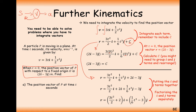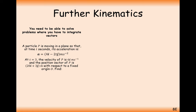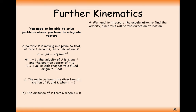The important takeaway is that c is a vector as well. Moving on to another question: acceleration is 4i minus 2tj. The second paragraph gives information needed to find c. We also need to find the angle between the direction of motion of P and the i vector when t equals 2. The direction of motion is the velocity, so we need to integrate the acceleration to find velocity.